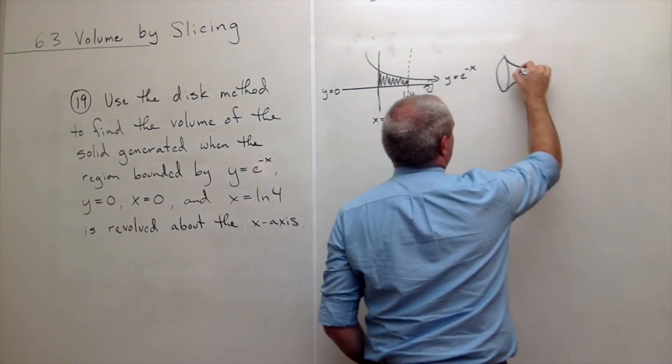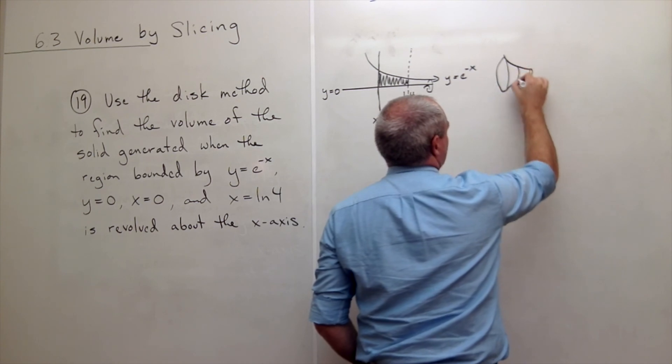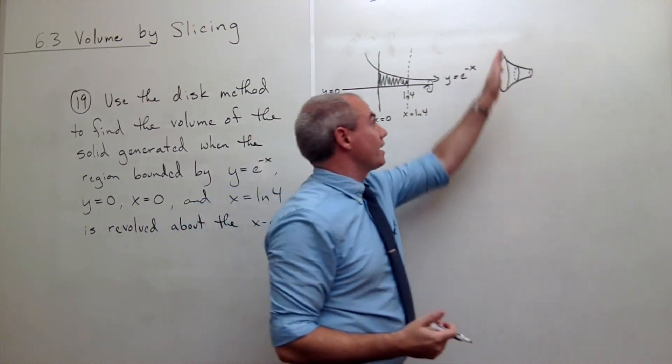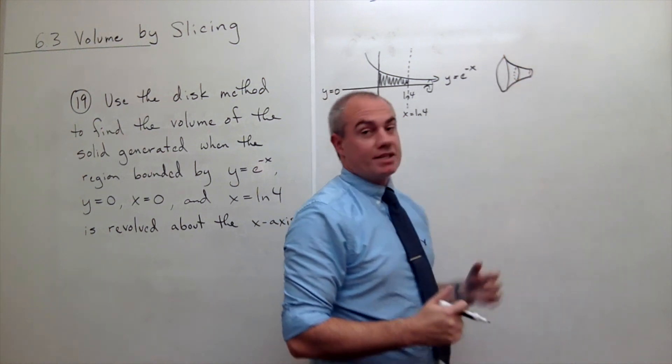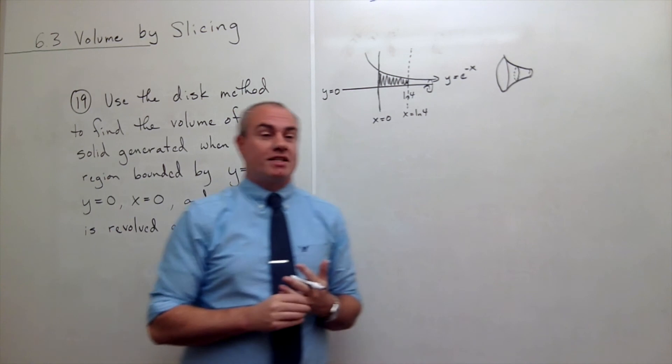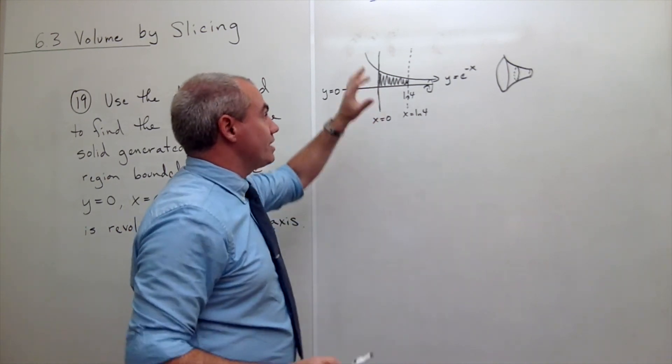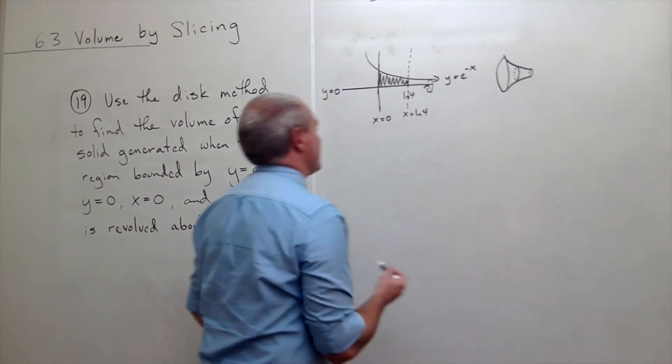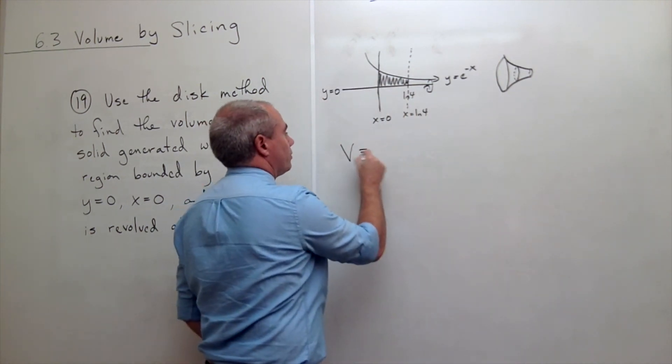Our cross sections of this thing are not surprisingly disks. So cross sections at every point of this thing is a disk. And so it's very well named the disk method. So we're using the disk method to figure out this thing's volume. And what we want to do is we want to integrate this thing to find its volume.